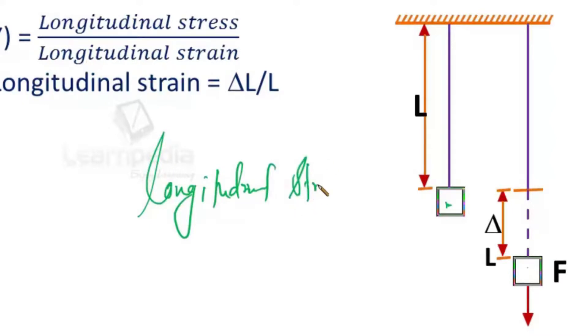Longitudinal strain in this case would be change in length divided by the original length L. And if force F is applied, then we are assuming that same tension is generated inside the rod or inside this wire.